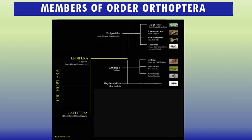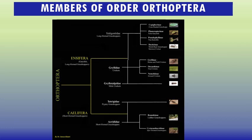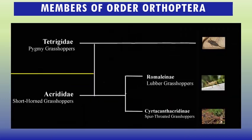Caelifera has two families: Tetrigidae (pygmy grasshoppers) and Acrididae (short-horned grasshoppers). Acrididae is again divided into two sub-families: Romalinae (lubber grasshoppers) and Acridinae/Oedipodinae, which include spur-throated grasshoppers.